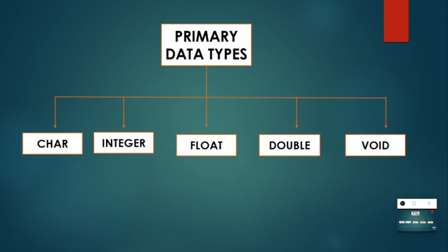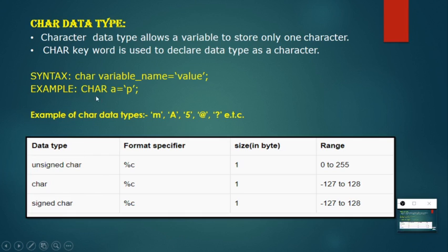Primary data type is also called as primitive data type and built-in data type. There are five different types in the primary data type: character, integer, float, double, and void.